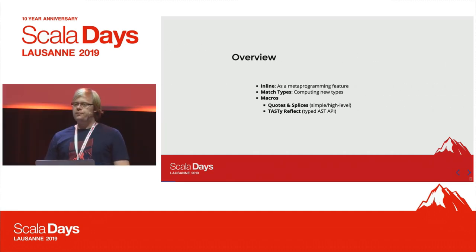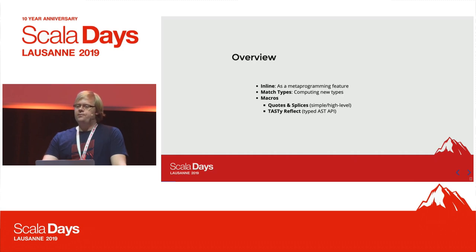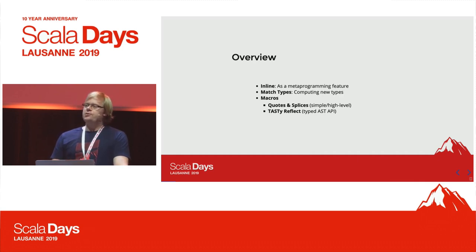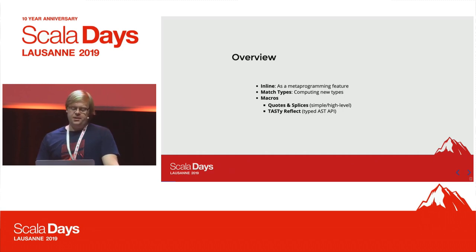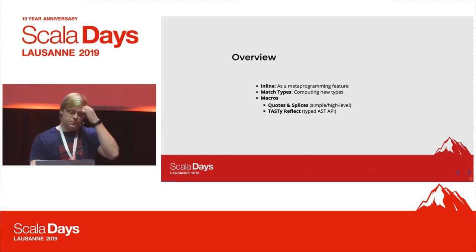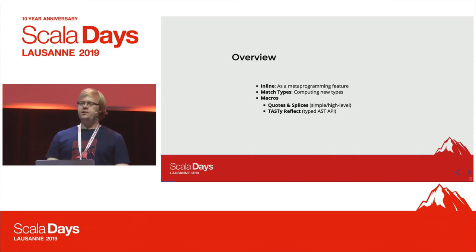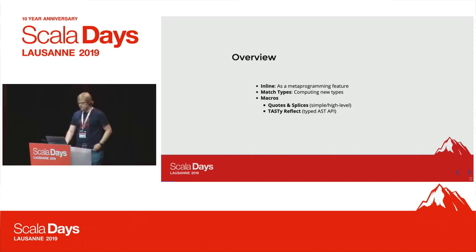We're going to cover three topics. First is inline as a metaprogramming feature. Then we're going to cover match types to compute new types. And then we're going into macros, which is really user-written code that will execute some code to compute a new program that will be generated in place. There we have two subsections: quotes and splices, which is a simple and high-level API, and then Tasty reflection, which is the equivalent of the abstraction we have right now in Scala 2 macros, but a bit more restrictive.